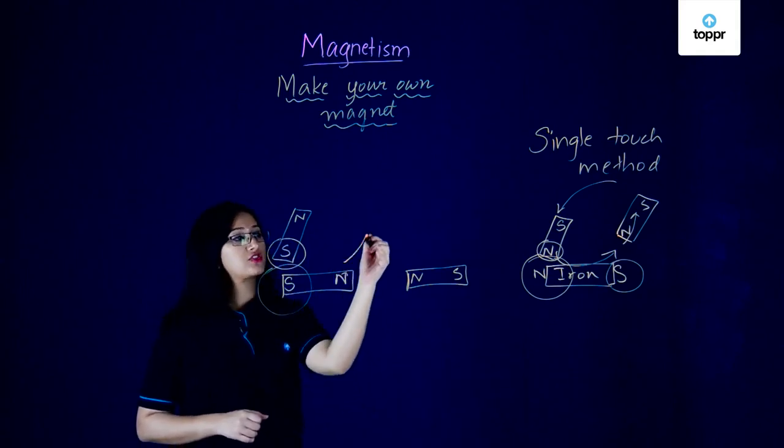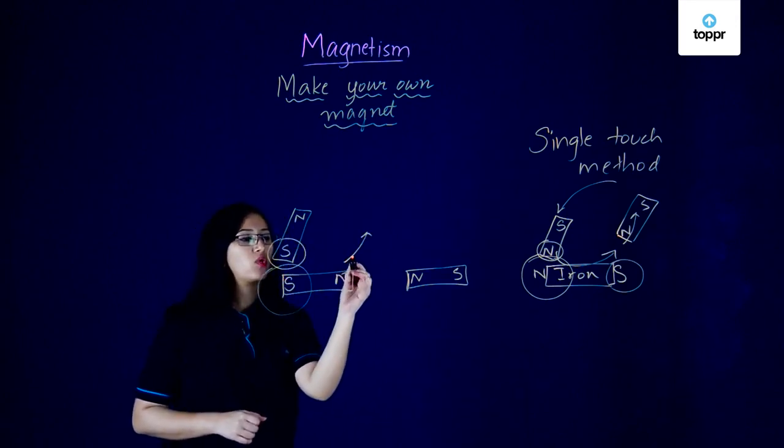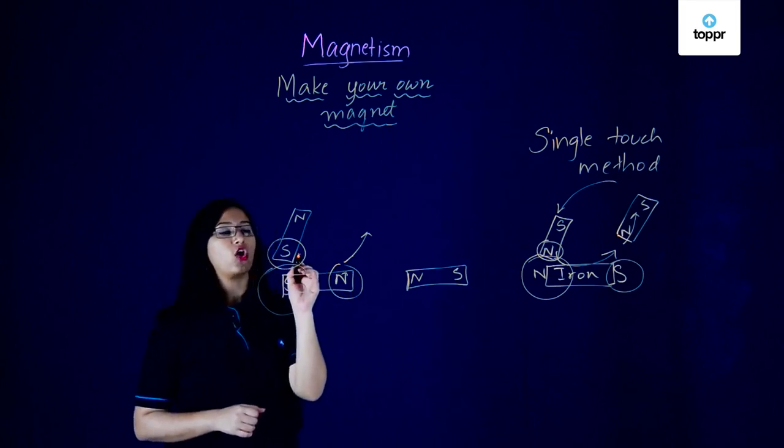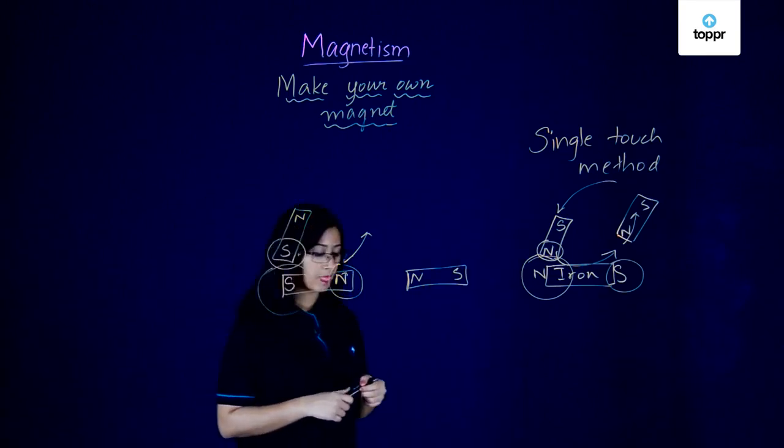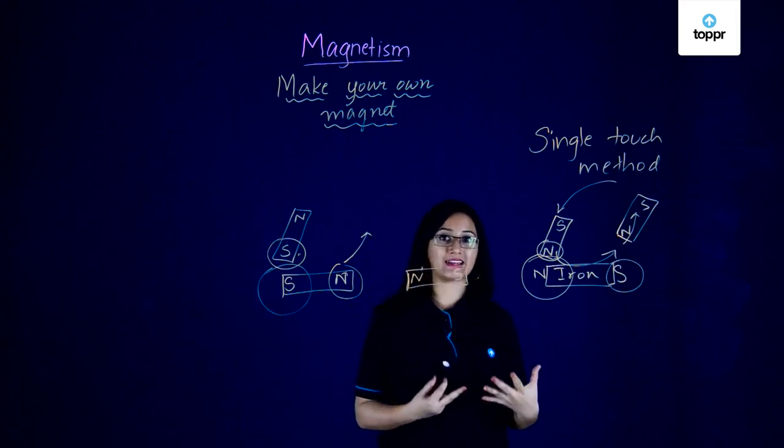And the point at which you're removing or taking away your magnet will have a pole opposite to that of your magnetic pole. This was one method in which you can actually create a magnet on your own.